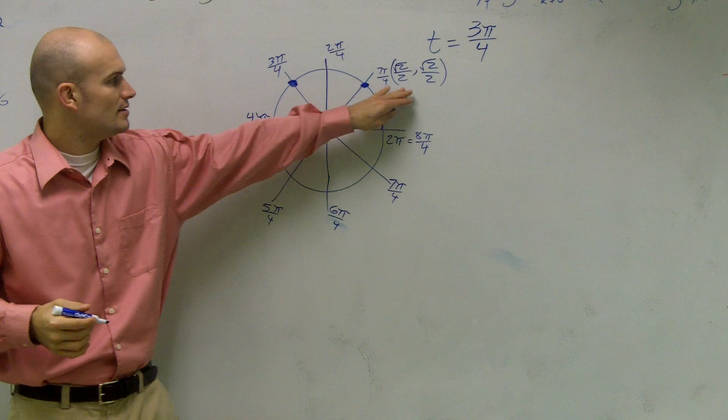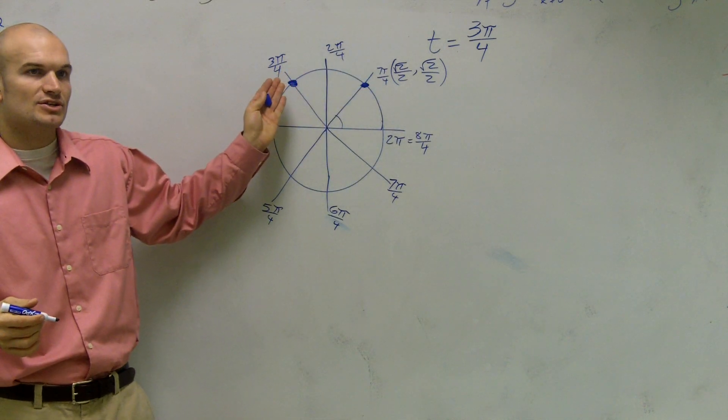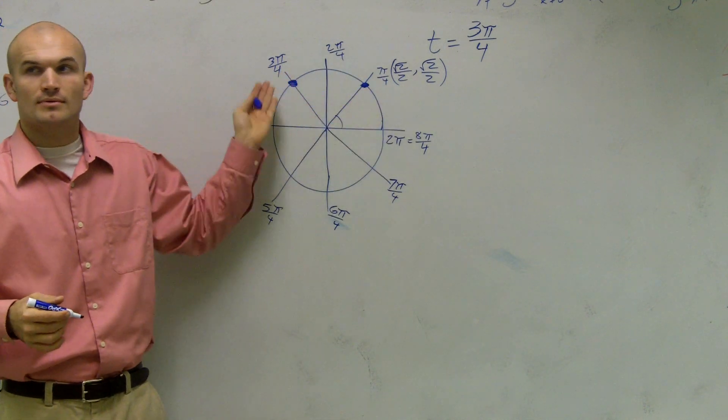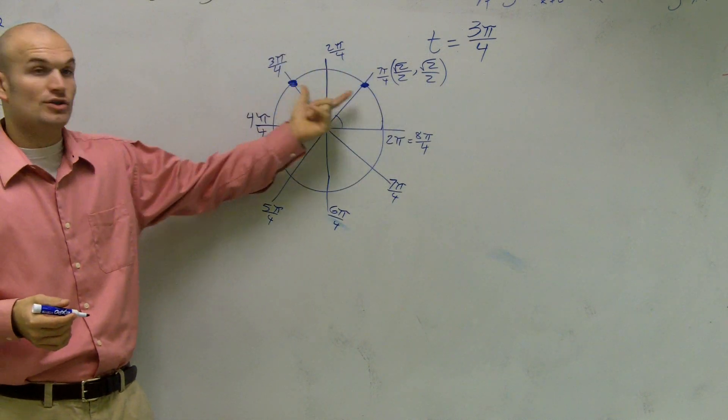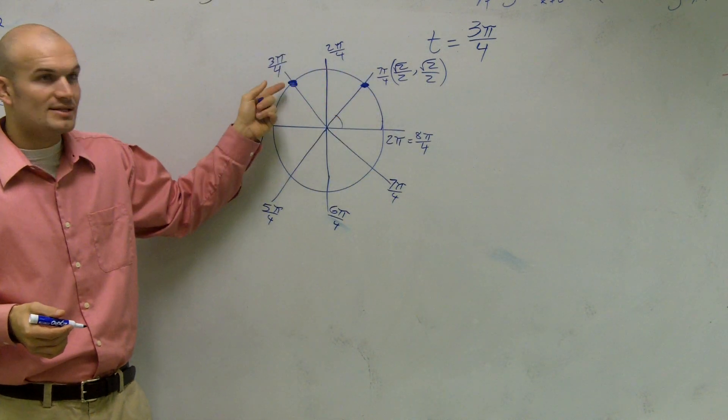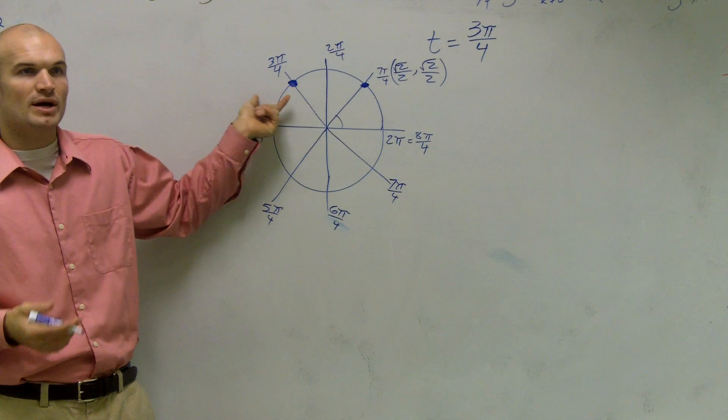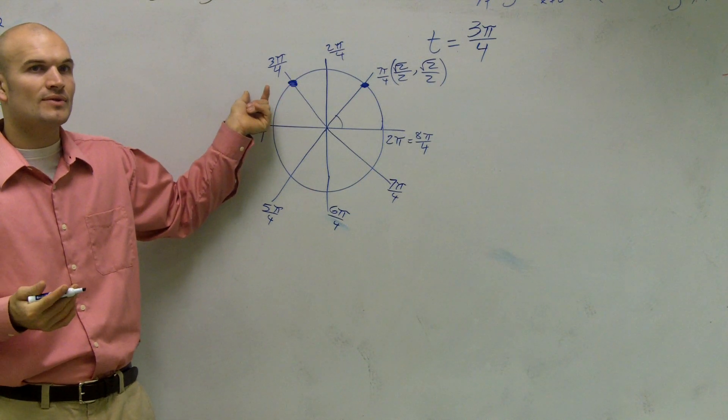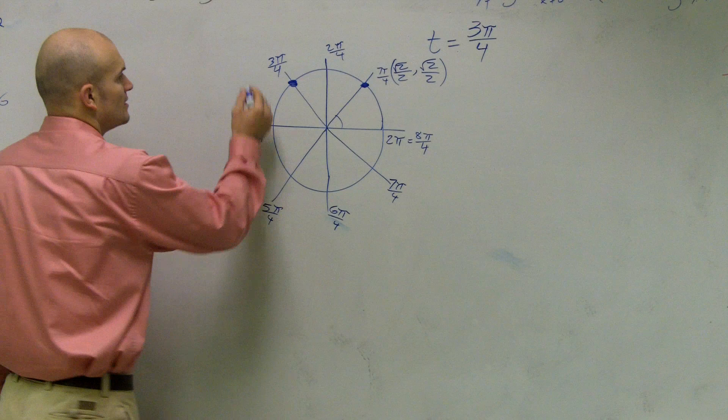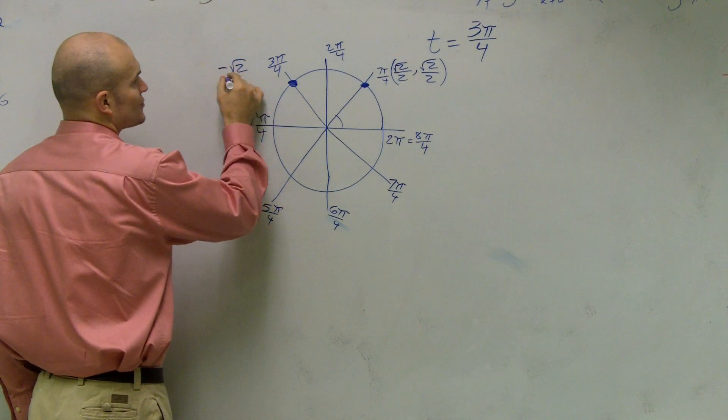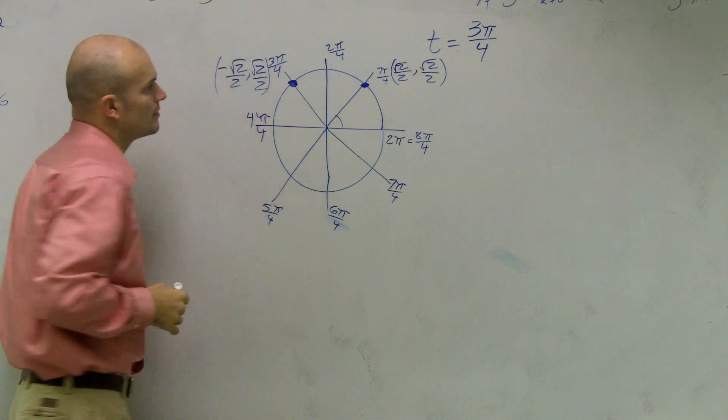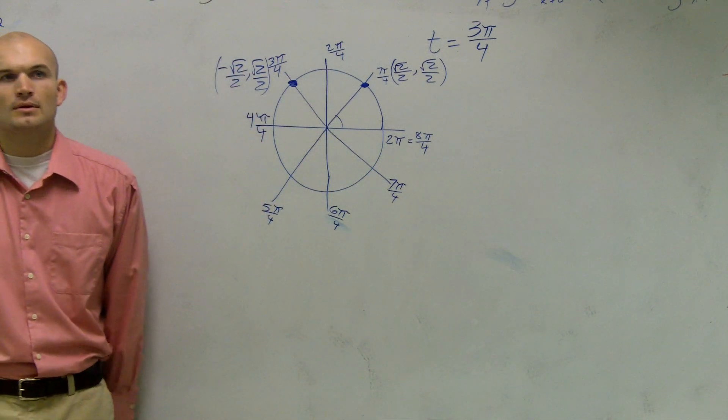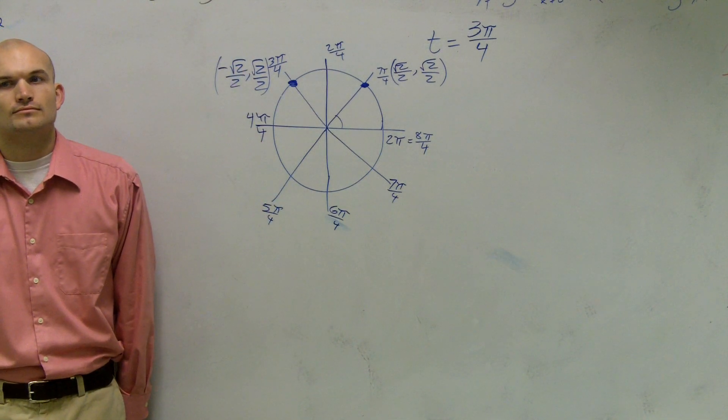When we look over here, this point is an exact reflection of this point. It's just a reflection about the y-axis. So the only thing that's different is this point is still going to use the same coordinates, but we're now going to have a negative value for your x. So I can say this is negative square root of 2 over 2, comma, square root of 2 over 2.